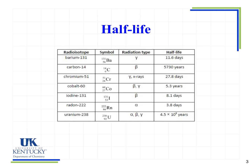This table shows some examples of different radioisotopes and the type of radiation they undergo. Barium-131 undergoes gamma radiation and has a half-life of 11.6 days.